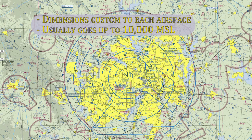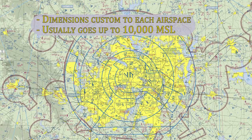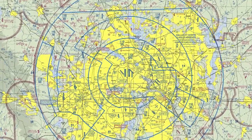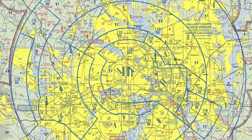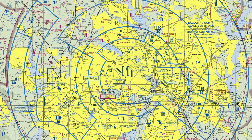In general, Class Bravo airspace goes from the surface up to 10,000 feet — that's not always standard but most of the airspaces go up to 10,000 feet MSL. Class Bravo airspace is centered usually around a navigational aid; in this case it's the Maverick VOR. All these airspace circles are based on distance from that VOR — 10 miles, 13 miles, 20 miles, etc.